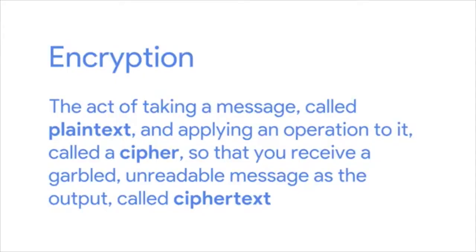The topic of cryptography, or hiding messages from potential enemies, has been around for thousands of years. It's evolved tremendously with the advent of modern technology, computers, and telecommunications. Encryption is the act of taking a message, called plain text, and applying an operation to it, called a cipher, so that you receive a garbled unreadable message as the output, called ciphertext. The reverse process — taking the garbled output and transforming it back into the readable plain text — is called decryption.